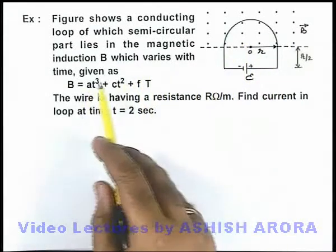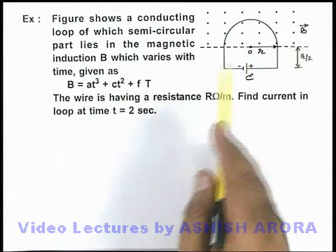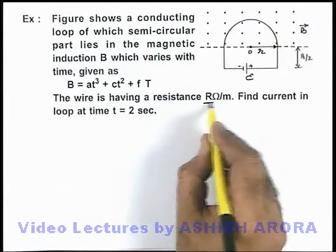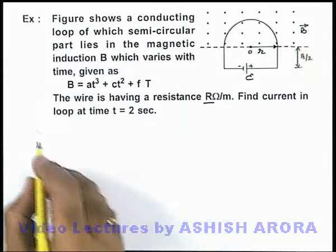Which varies with time, given as at³ + ct² + f Tesla. And here the wire is having a resistance capital R ohms per meter, and we are required to find the current in the loop at time 2 seconds.